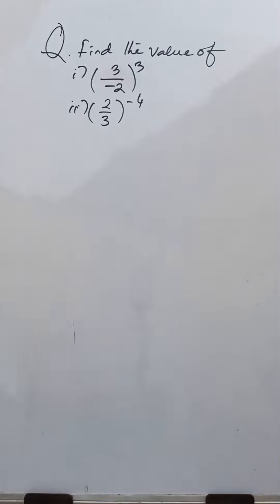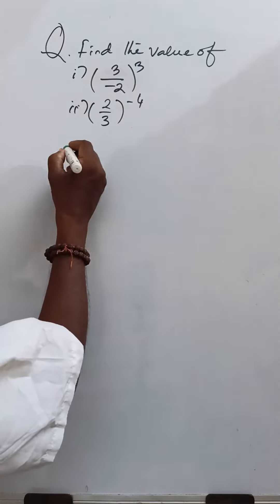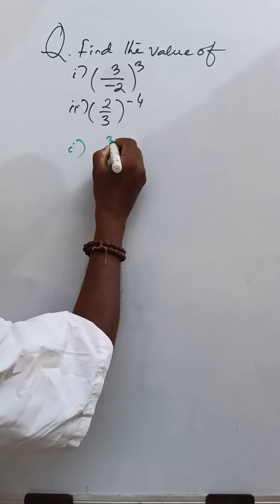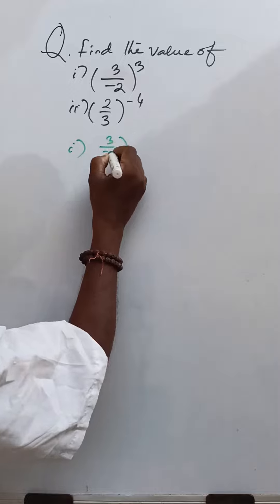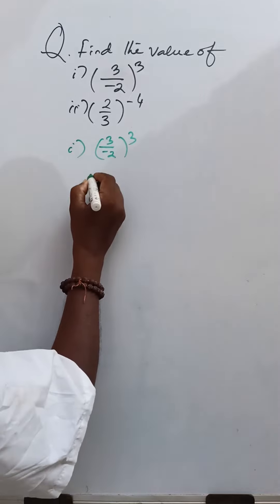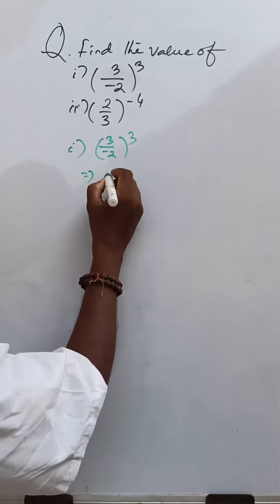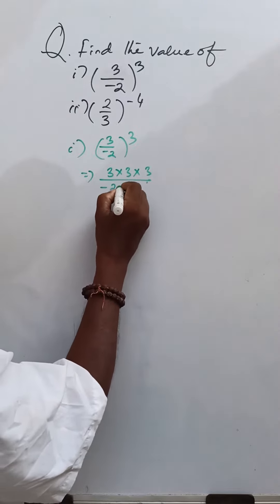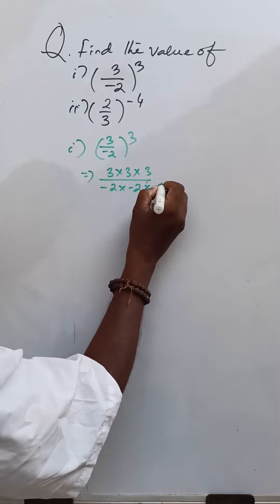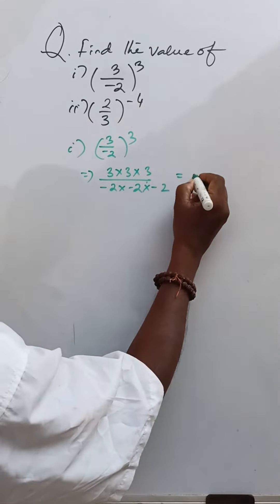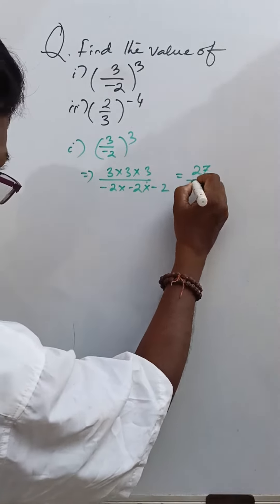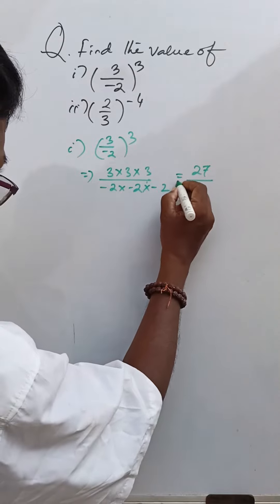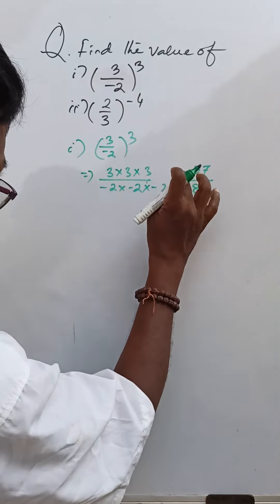From part 1, 3 by minus 2 whole cube is equal to 3 into 3 into 3 divided by minus 2 into minus 2 into minus 2. This is 27 by minus 8 as the answer.